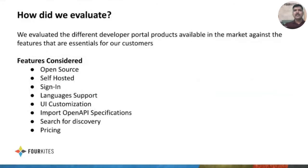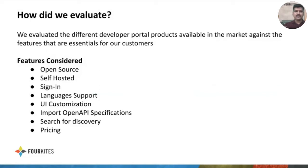Let me quickly move on to the evaluation criteria we followed. In the initial phase, we evaluated multiple developer portal products available in the market — nearly seven to eight products. The evaluation criteria were mainly based on the needs of our organization, 4KITES, and the main features we listed in the document.